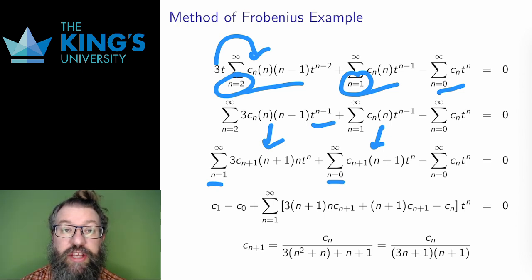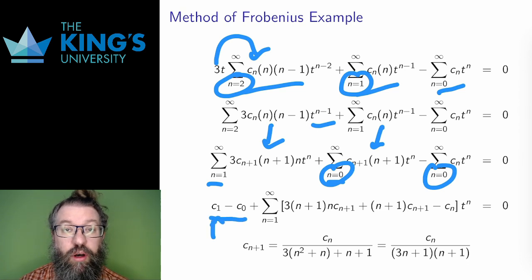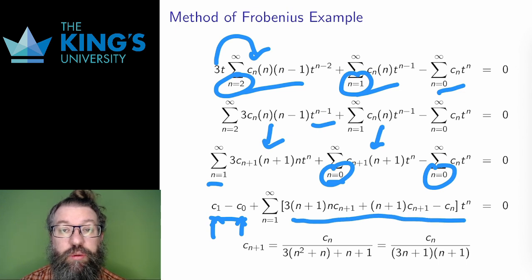Then I pull out terms to make the starting points the same. I need to pull out the first term from the second and the third series. Those are going to be c₁ and negative c₀. Then I can combine the series into one. From the terms inside the series, I set them equal to 0.